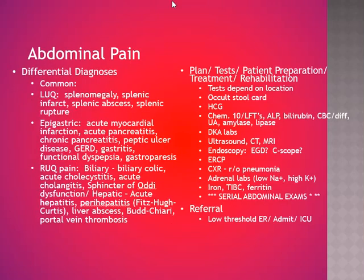The differential diagnosis of abdominal pain by location is extensive. Left upper quadrant: splenomegaly, splenic infarct, abscess, or rupture. Epigastric: be very careful — acute myocardial infarction can present as epigastric pain without chest pain. Also acute and chronic pancreatitis, peptic ulcer disease, GERD, gastritis, functional dyspepsia, and gastroparesis. Right upper quadrant — liver and gallbladder territory: biliary colic, acute cholecystitis, acute cholangitis, sphincter of Oddi dysfunction; hepatic causes include acute hepatitis, perihepatitis (think Fitz-Hugh-Curtis syndrome), liver abscess, Budd-Chiari syndrome, and portal vein thrombosis.